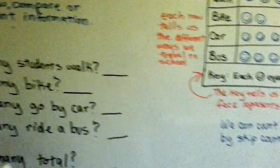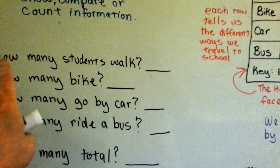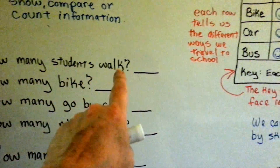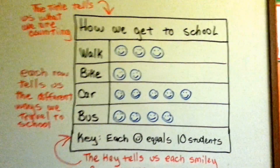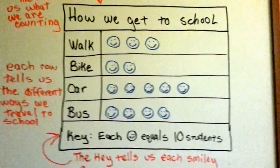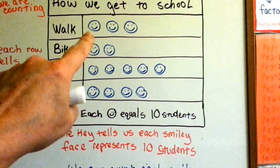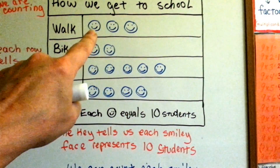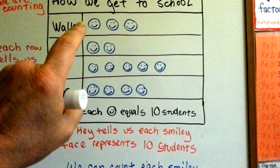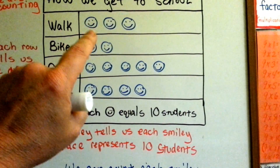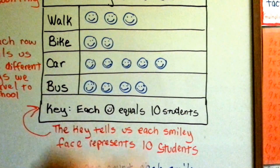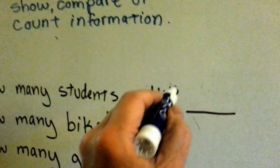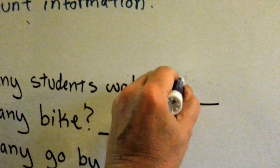So let's look at our questions. How many students walk? From looking at this picture graph, how many students would you say walk? Remember, each smiley face equals ten. So let's skip count by tens: ten, twenty, thirty. Thirty students walk. Let's write that on our line here.